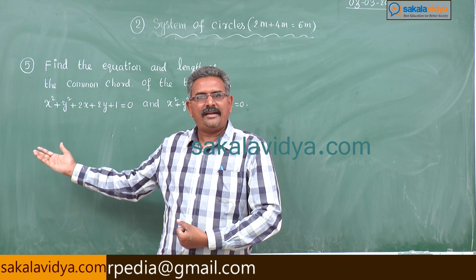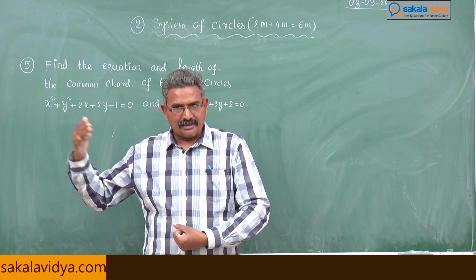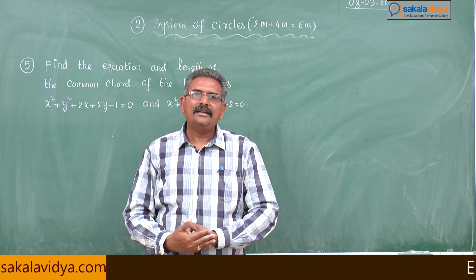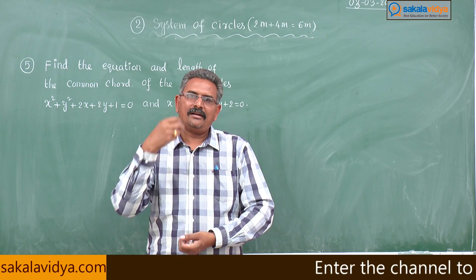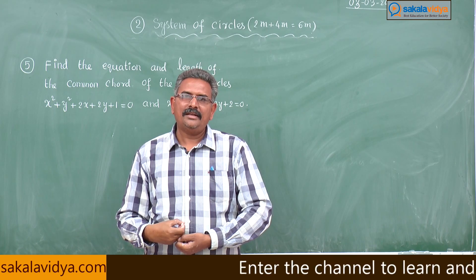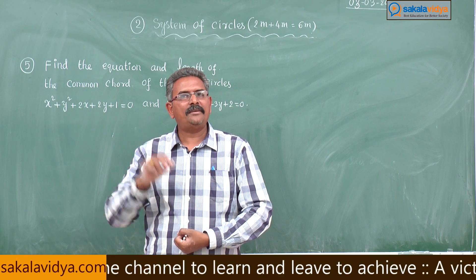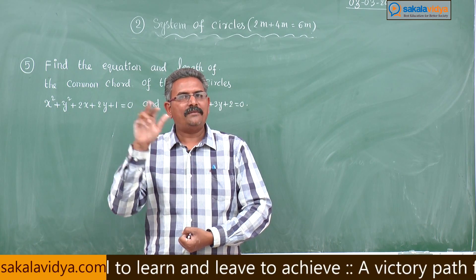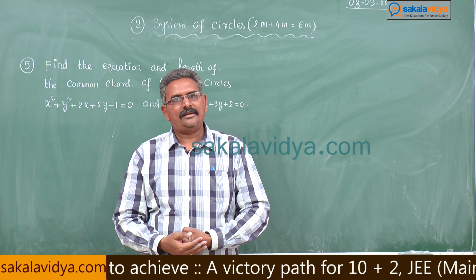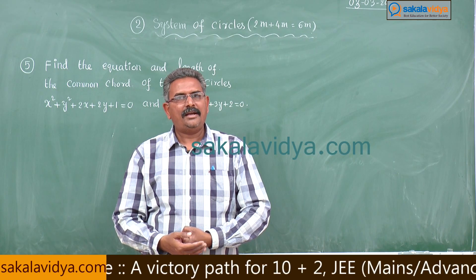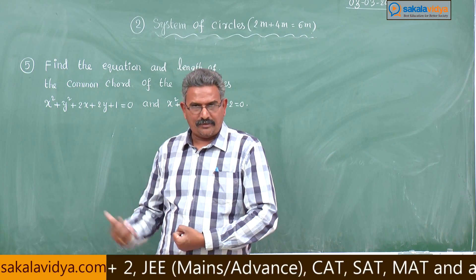We need to find the center and radius of one of the circles. The perpendicular distance from the center to the common chord is d, the radius is r, and the length of the chord is given by 2√(r² − d²). Let us do the problem now.